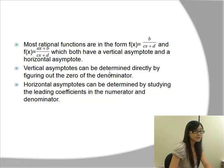Vertical asymptotes can be determined directly by figuring out the zeros in the denominator. The horizontal asymptote can be determined by studying the leading coefficient of the numerator and denominator. So in this case, the horizontal asymptote will be a over c.